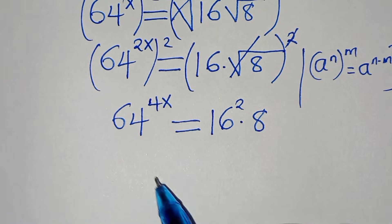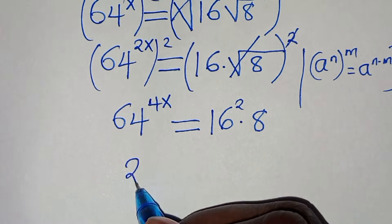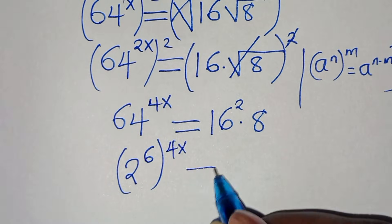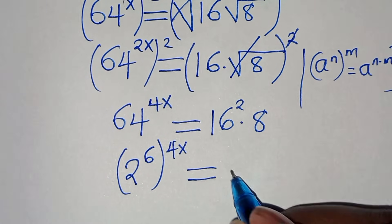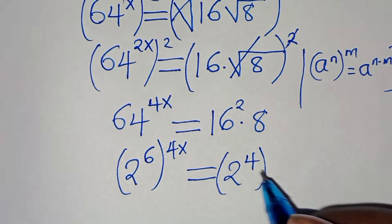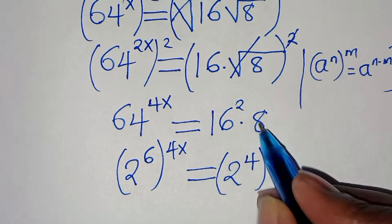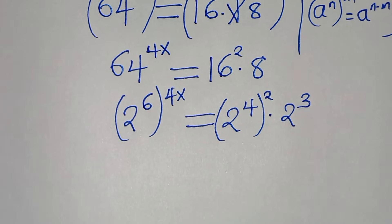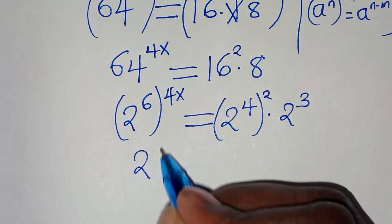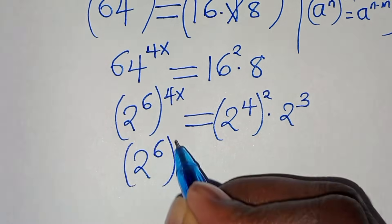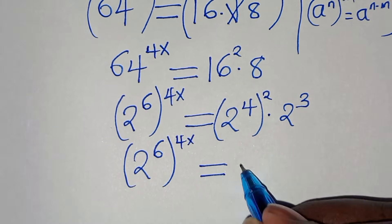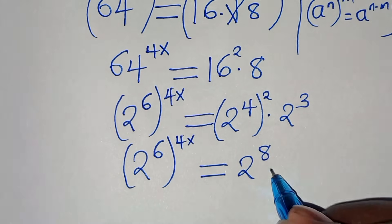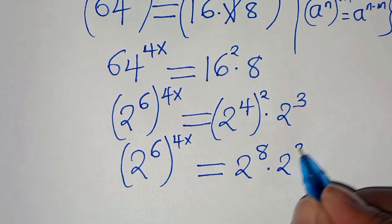We can express 64 as 2 to the power of 6, raised to the power of 4x. This equals 16, which is 2 to the power of 4, raised to the power of 2, times 8, which is 2 to the power of 3. So we have 2 to the power of 6 raised to the power of 4x, equal to 2 to the power of 4 times 2, which is 8, then times 2 to the power of 3.